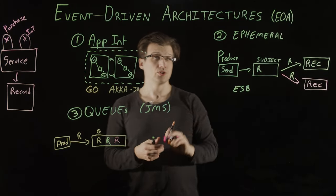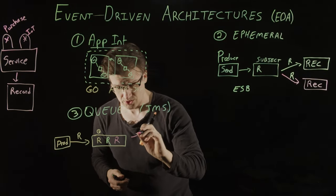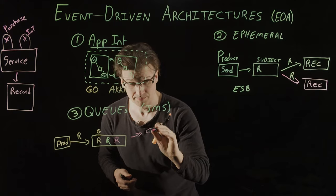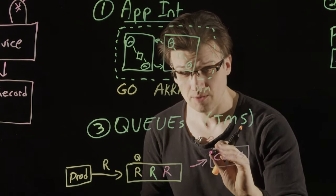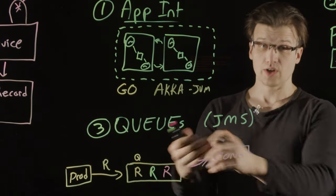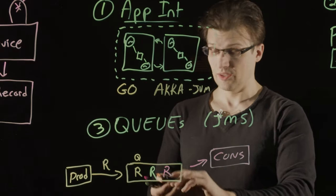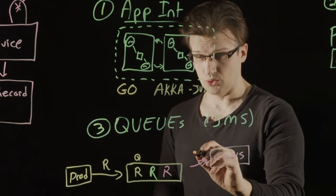And we have a producer that publishes records into the queue. Similar to ephemeral messaging, we also have a consumer. And this consumer will consume records out of the queue from the oldest record first. So it'll consume this oldest record, process it.